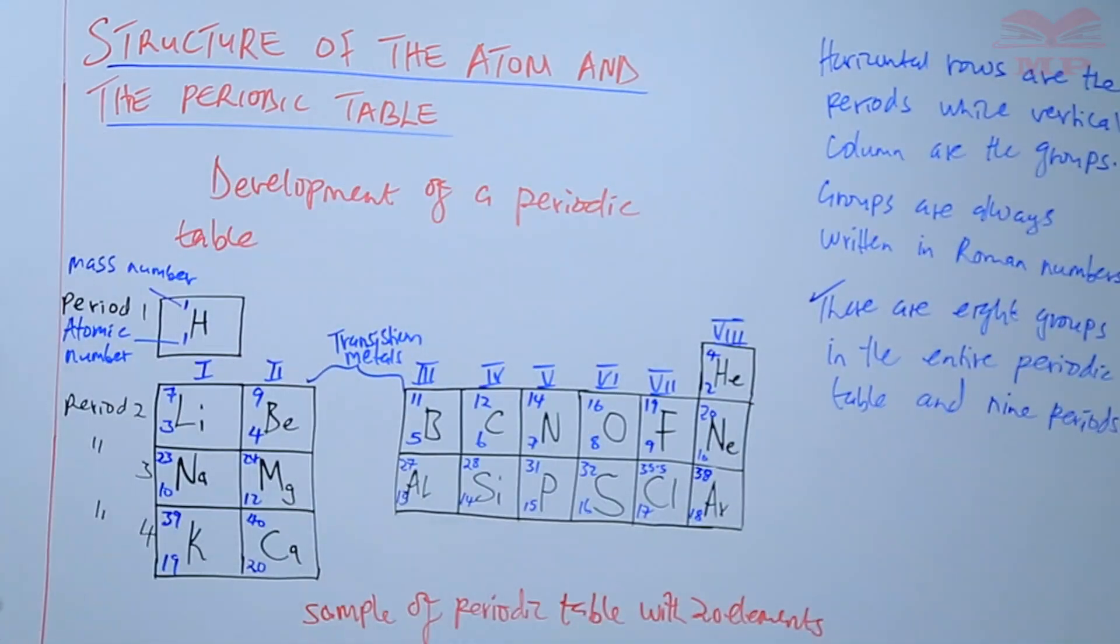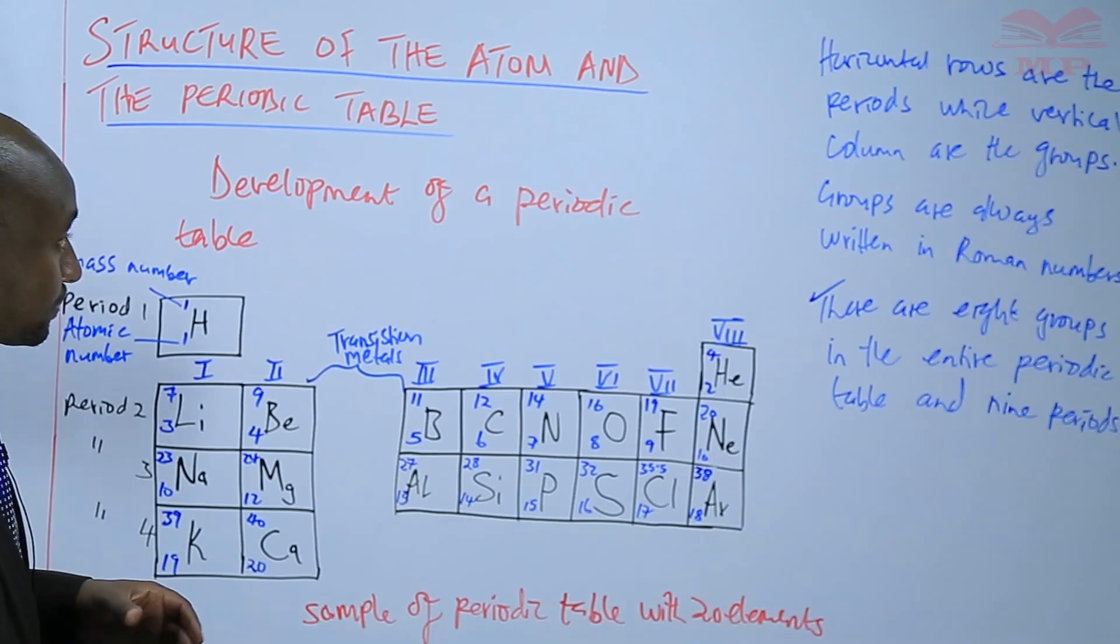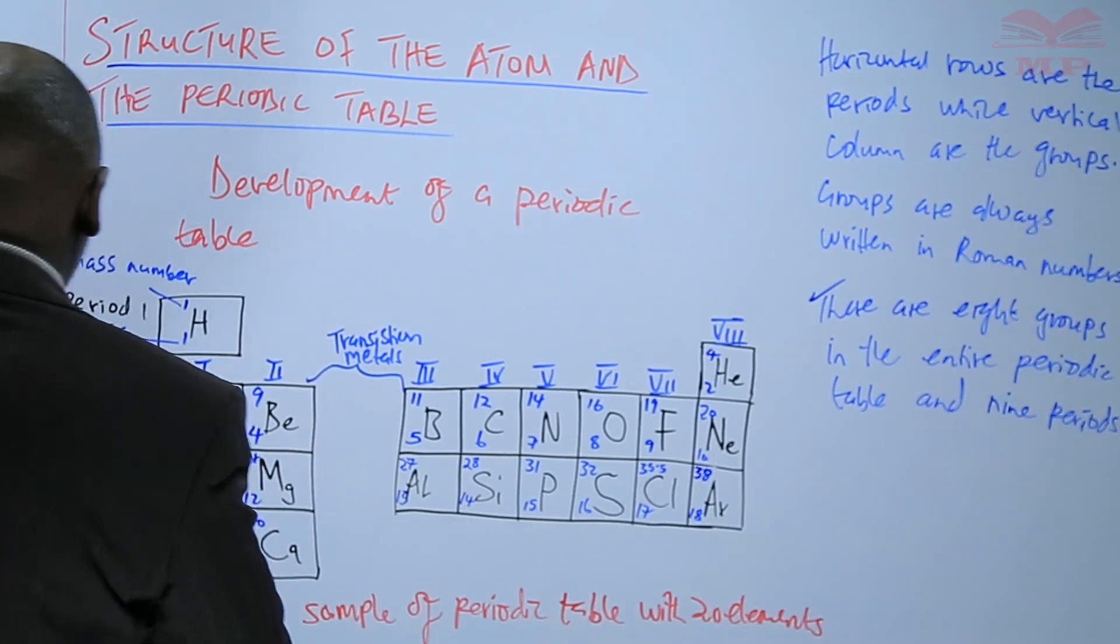So basically that's how the periodic table is developed, and for this periodic table we have only considered the first 20 elements from hydrogen up to calcium. So we'll have an assignment on this.